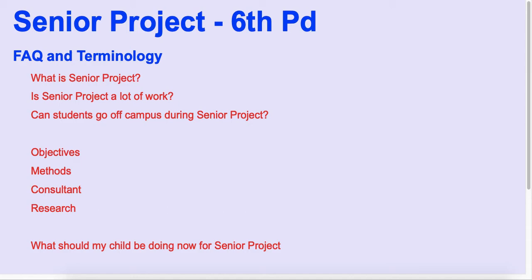Senior Project is built around five objectives. An objective is a goal that a student designs on their own based on some sort of linked topic. For example, if a student wants to do a Senior Project about photography, one objective might be to create a photo exhibit with six or seven of their own photos.